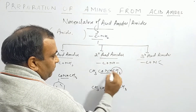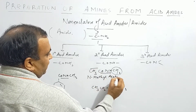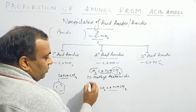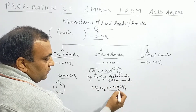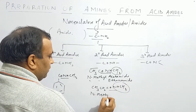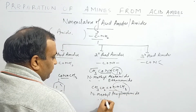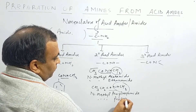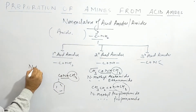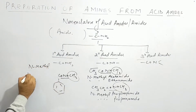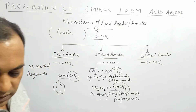For the common name of secondary amides: the group on nitrogen side is named with prefix N. So CH3-CO-NH-CH3 is N-Methyl Acetamide. IUPAC name is N-Methyl Ethanamide. For the three-carbon example, it is N-Methyl Propionamide (common) or N-Methyl Propanamide (IUPAC). And the benzene example is N-Methyl Benzamide.